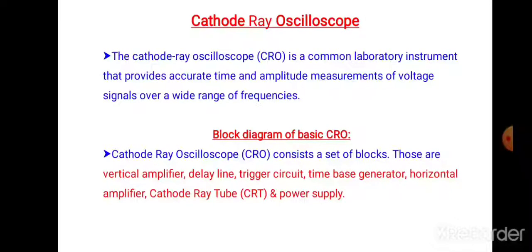What do you mean by cathode ray oscilloscope? The cathode ray oscilloscope is a common laboratory instrument that provides accurate time and amplitude measurements of voltage signals over a wide range of frequencies.